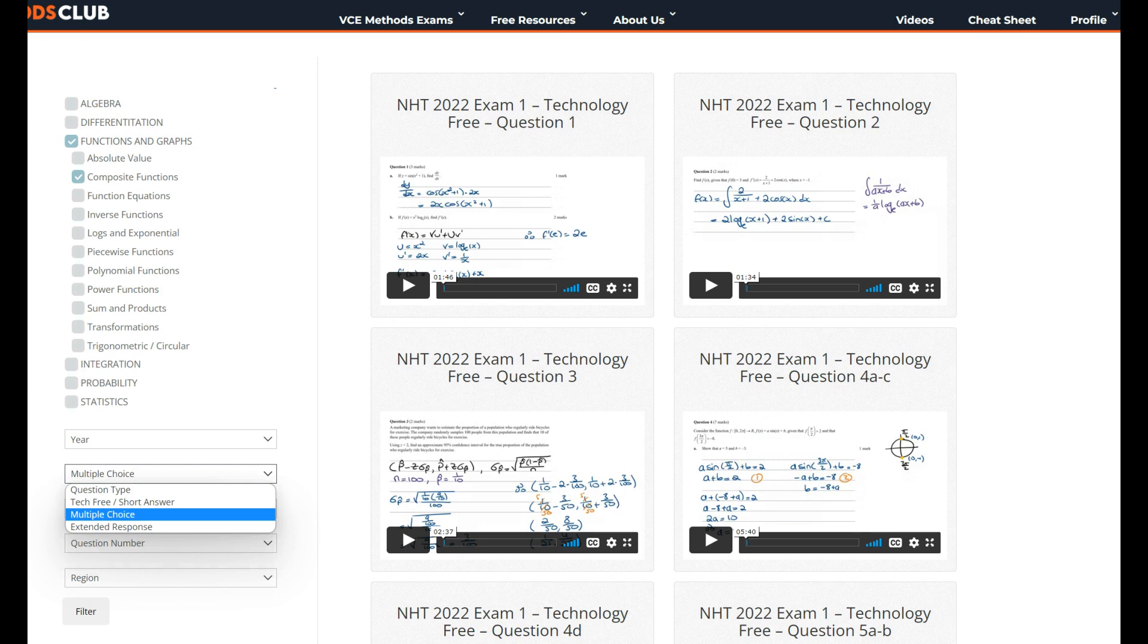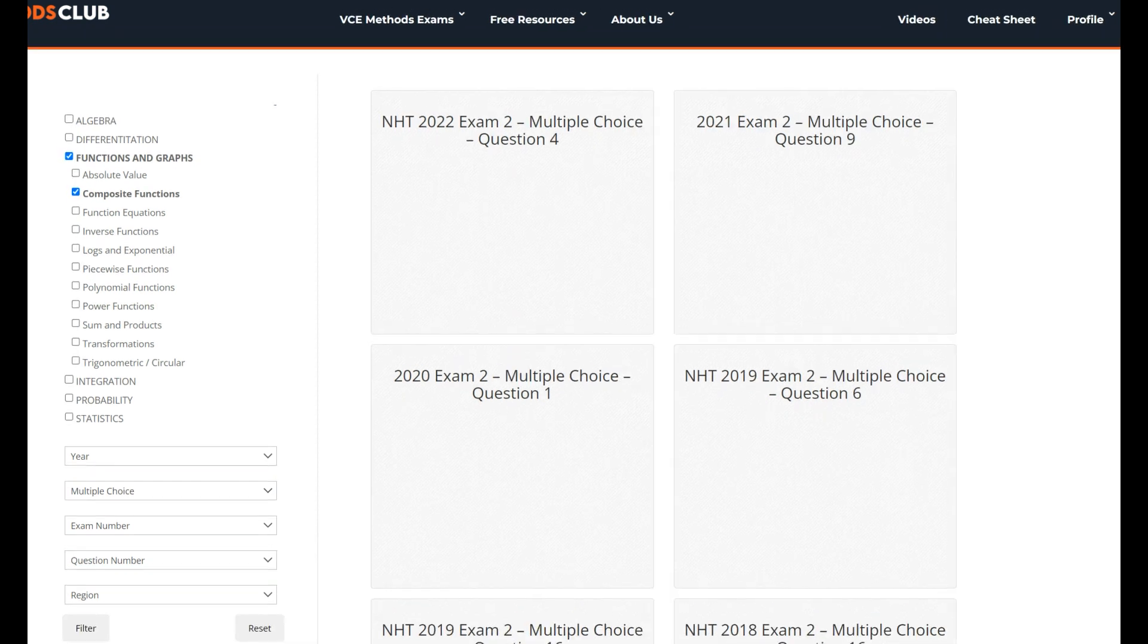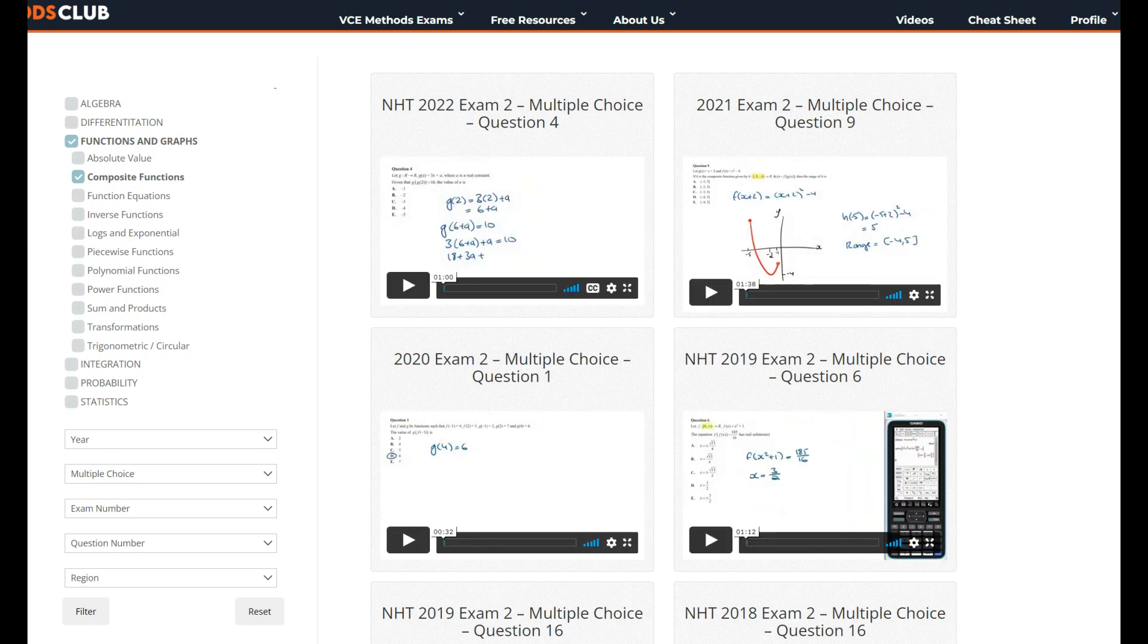Go to Question Type and select Multiple Choice, and then click on Filter. This is then going to instantly group all the past Maths Methods exam questions in the Multiple Choice section related to Composite Functions.